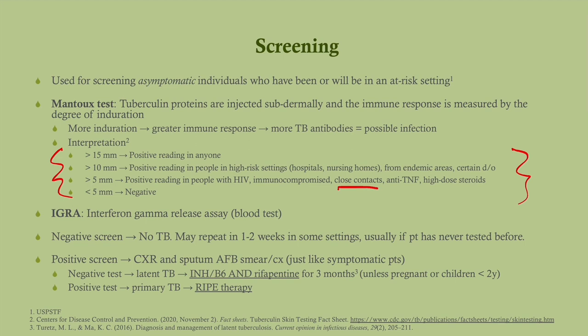If they have a negative confirmatory test after the screen, you're going to consider this latent TB. In that case you do isoniazid and rifapentine. In the past we used to do nine months of isoniazid alone; however, by adding rifapentine we only need to do three months. That's nice because it increases compliance and reduces the risk of hepatotoxicity from isoniazid. In pregnant women and children less than two years, you have to devise a different strategy — you will not be asked about that.